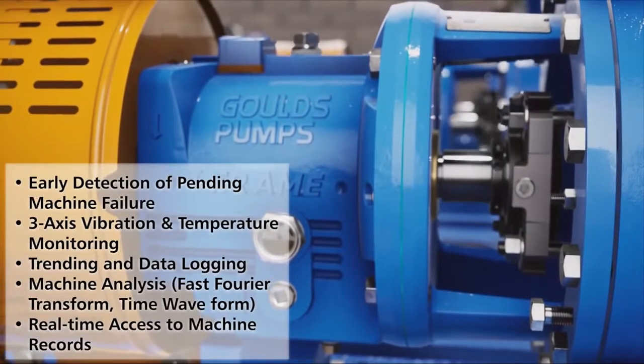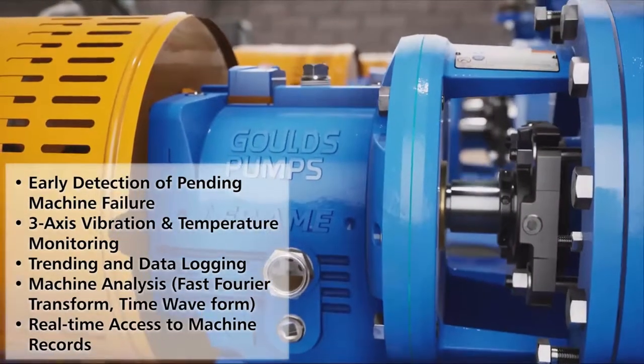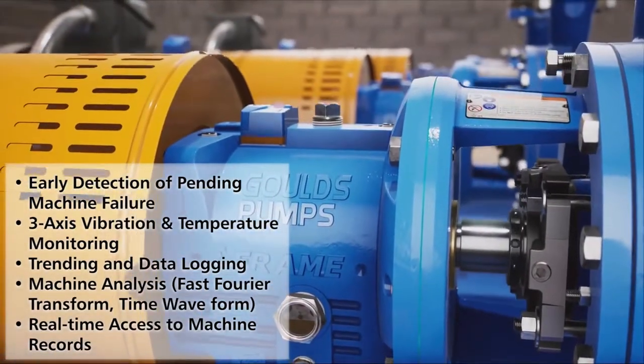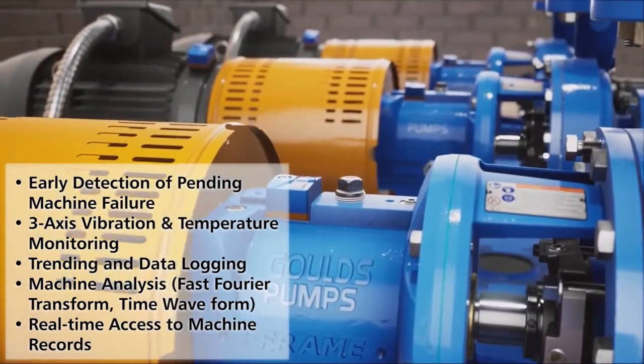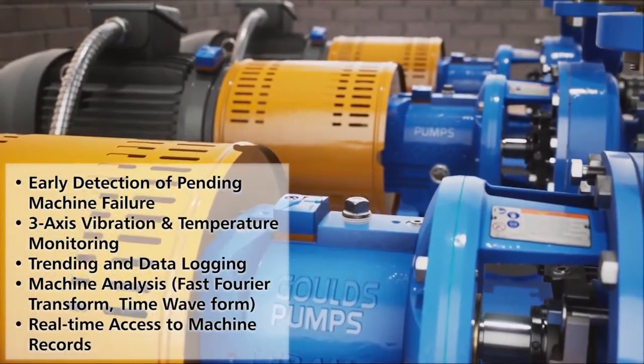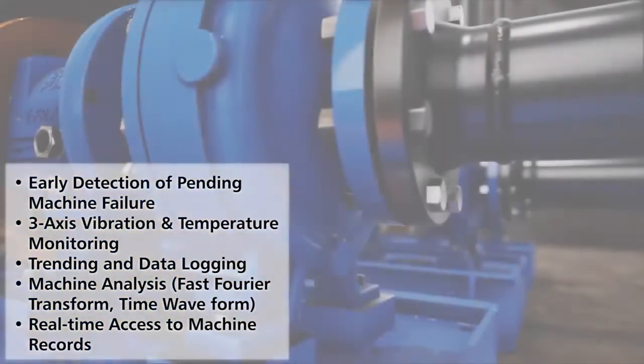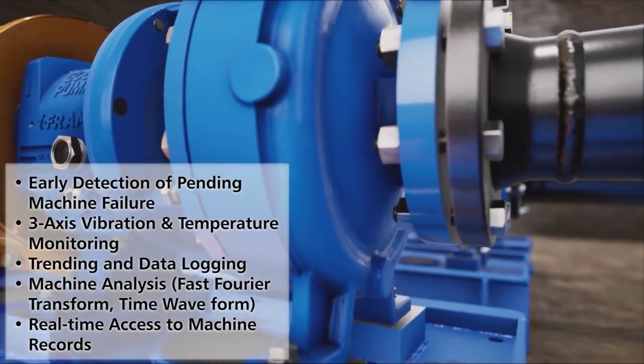iAlert 2 is a Bluetooth smart equipment monitor that provides monitoring and diagnostics capabilities of machine health with 24/7 monitoring, a wireless range of up to 100 feet (30 meters), and the ability to scan multiple iAlert 2 devices at once with a mobile device.